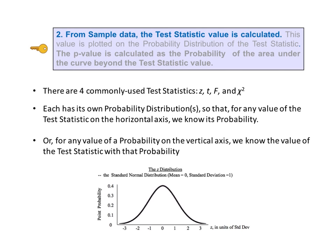KTU number 2 begins by saying that we calculate the value of a test statistic from the sample data. But what is a test statistic? There are four commonly used test statistics: Z, T, F, and chi-square. There will be a separate video on test statistics, but briefly, a test statistic has its own probability distribution or distributions. That means that for any value of the test statistic on the horizontal axis, we know its probability. The test statistic Z has the standard normal distribution as its probability distribution.